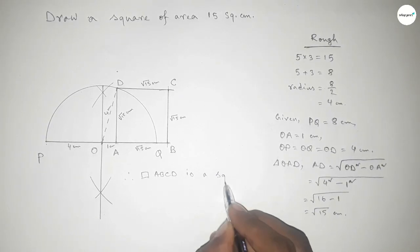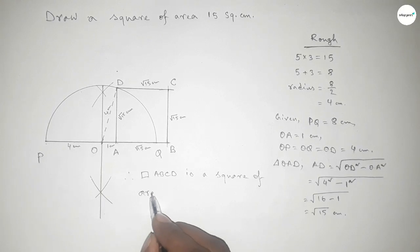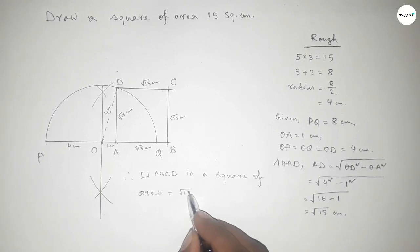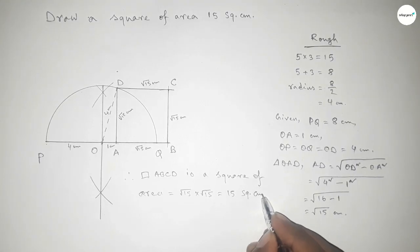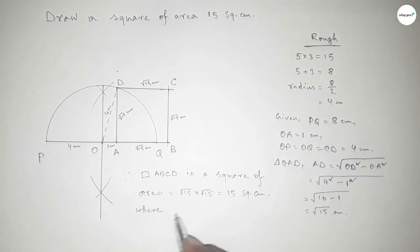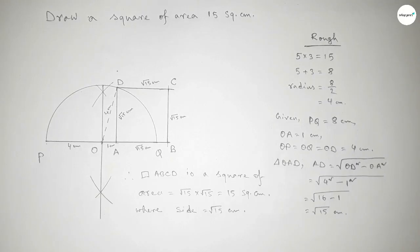Therefore, rectangle ABCD is a square of area equal to side into side — root 15 into root 15 equal to 15 square centimeters, where each side equals root 15 centimeters. That's all. Thanks for watching — if this video is helpful to you, please share it with your friends.